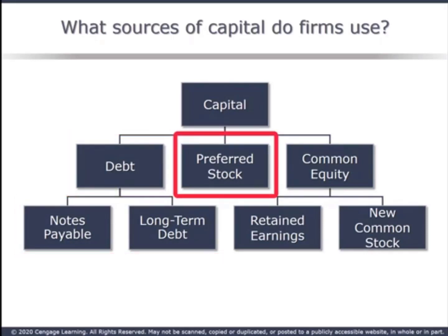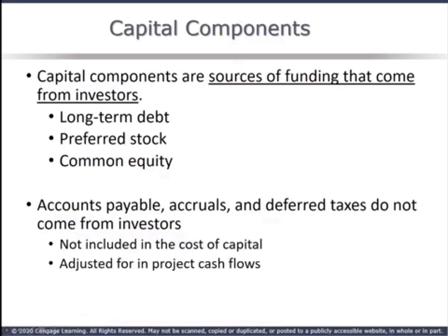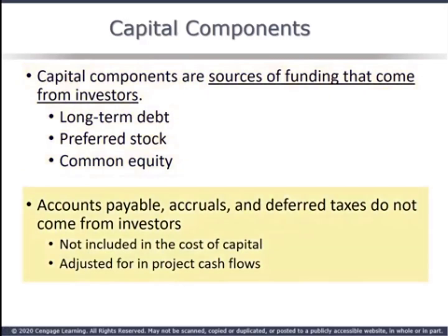Preferred stock is clearly a source of capital. Common equity capital can come from two sources: retained earnings and newly issued common stock. Capital comes from preferred stock, common stock, and debt. Accounts payable, accruals, and other sources of cash are not from investors.